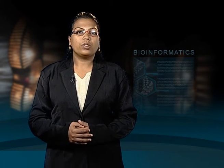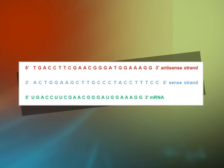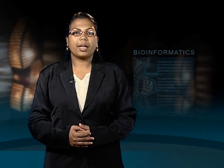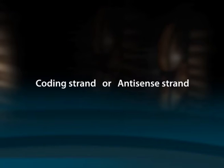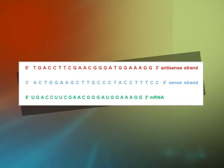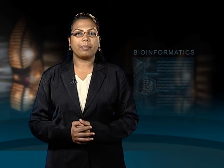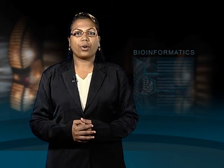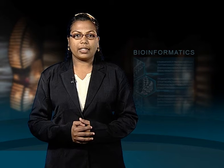The template strand, also called the minus strand or the antisense strand — shown in blue — serves as a template for mRNA synthesis. The enzyme RNA polymerase synthesizes an mRNA in the 5-prime to 3-prime direction, complementary to the template strand. The opposite DNA strand, shown in red, is called the coding strand, the non-template strand, the plus strand, or the sense strand. The simple way to find the corresponding mRNA sequence — shown in green — is to read the coding strand directly in the 5-prime to 3-prime direction, substituting U for T (uracil for thymine).